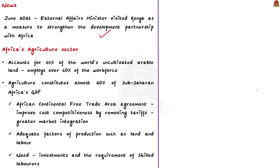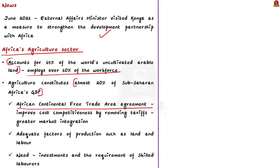This article especially throws light on the agricultural sector of Africa. Africa accounts for 65% of the world's uncultivated arable land and currently employs over 60% of the workforce. Agriculture constitutes almost 20% of sub-Saharan Africa's GDP, which is critical to Africa's economy. The African Continental Free Trade Area agreement is expected to improve cost competitiveness by removing tariffs. The African continent therefore holds greater market integration and adequate factors of production such as land and labour, but what they need at present is capital — investments and skilled labourers to boost their agricultural economy.